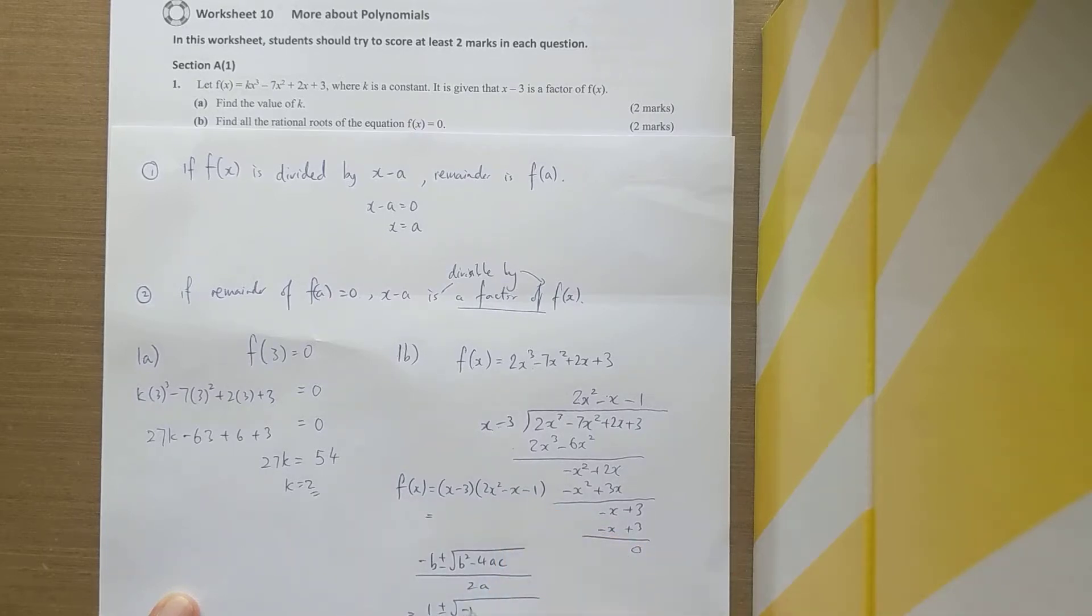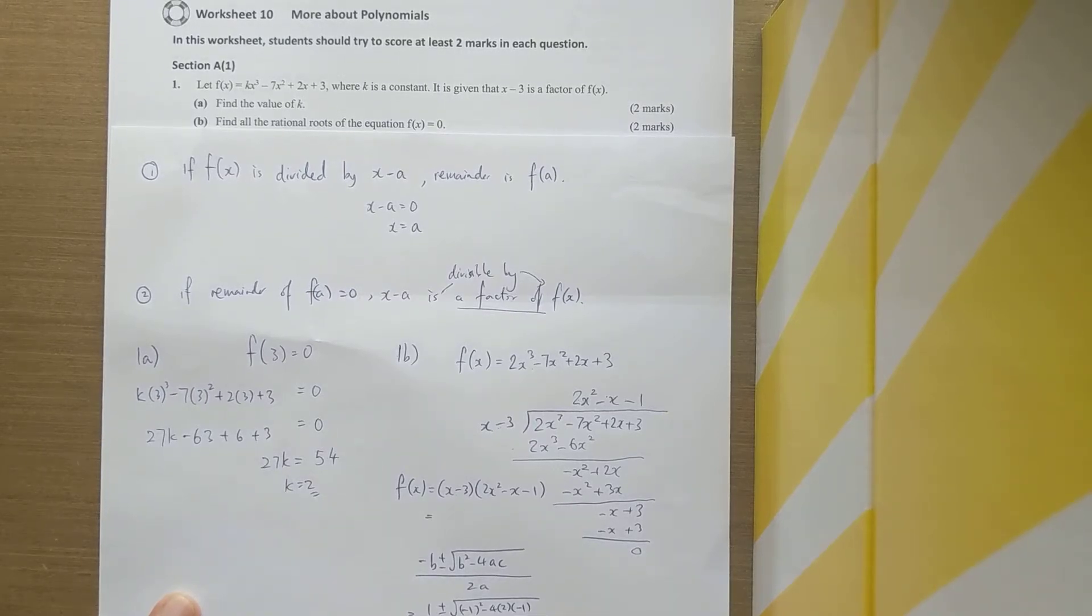That's 1 plus or minus square root of 1 plus 8, which is 9, over 4. Square root of 9 is 3, so 1 plus or minus 3 over 4. So you have two answers: one of them is plus, one of them is minus.